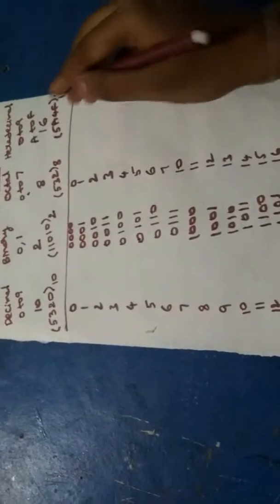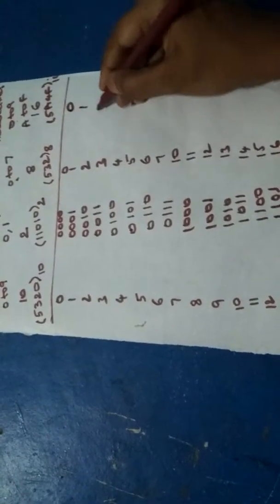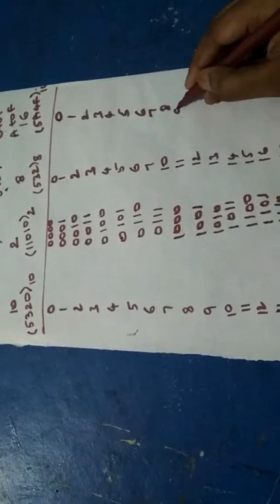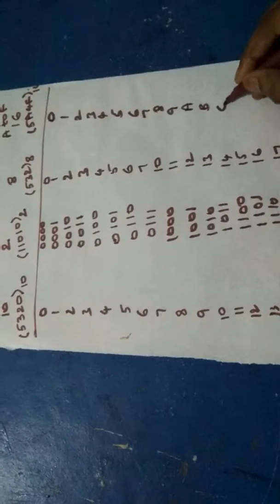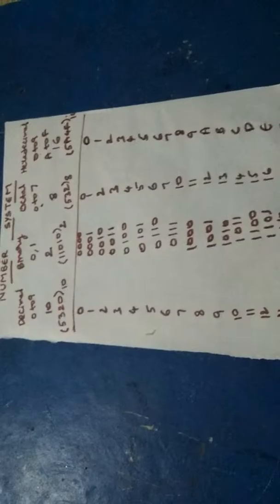Now in hexadecimal number system, as we have 0 to 9, it's 0, 1, 2, 3, 4, 5, 6, 7, 8, 9, and from 10 we have to take A to F: A, B, C, D, E, and F. This is the difference between the decimal, binary, octal, and hexadecimal number systems.